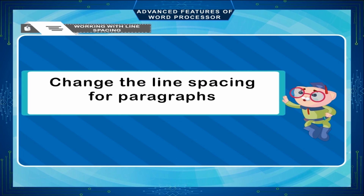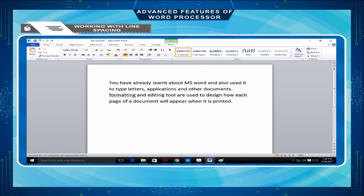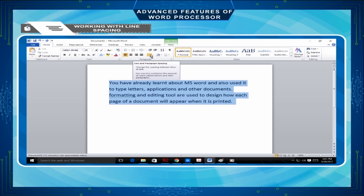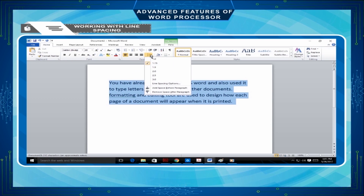To change the line spacing for paragraphs, select the paragraphs for which you want to change the line spacing. On the Home tab, in the Paragraph group, click on Line and Paragraph Spacing. Click on Line Spacing Options and select the option you want under Spacing.